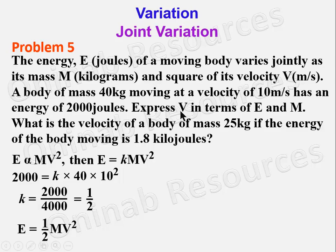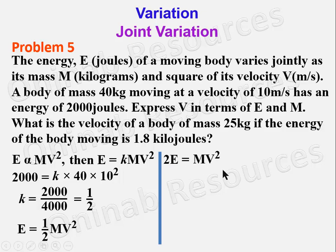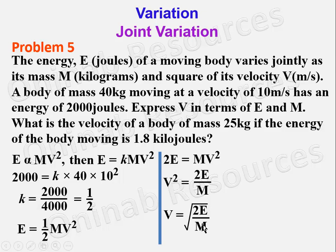To express v in terms of E and m, we make v the subject. Cross-multiplying gives 2E = mv². Dividing both sides by m: v² = 2E/m. Taking the square root: v = √(2E/m).